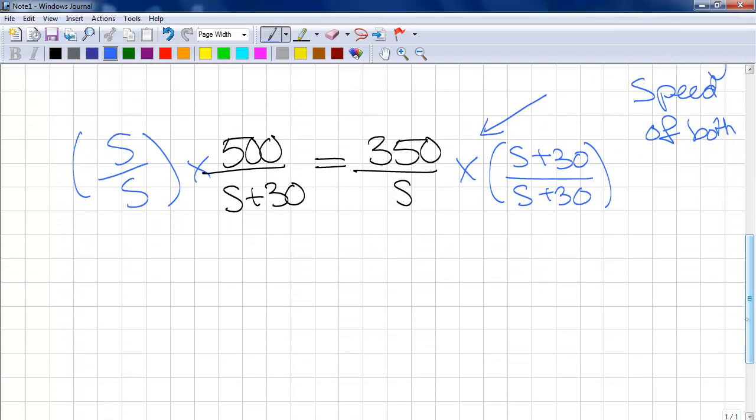This gives us 500S is equal to 350S plus 10,500 over S squared plus 30.